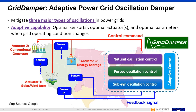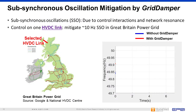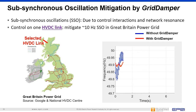In the United Kingdom, sub-synchronous oscillations may happen in the power transmission network due to interactions between renewables, HVDC, and the power grid. As an example, an artificial 10 Hz sub-synchronous oscillation was created in a simulation model representing the UK grid after 2030. Grid Damper was able to detect this 10 Hz sub-synchronous oscillation and quickly deployed control on the high-voltage DC link in the north to settle the high-frequency oscillations.